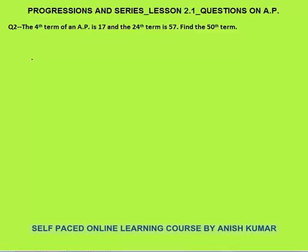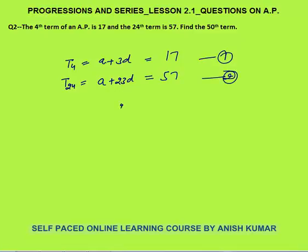Next question: the 4th term of an AP is 17 and the 24th term is 57. The 4th term = a + 3d = 17 (equation 1), and the 24th term = a + 23d = 57 (equation 2). We need to calculate the 50th term. Subtracting equation 1 from equation 2 gives 20d = 40.